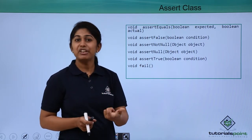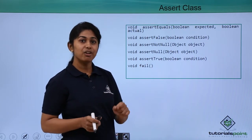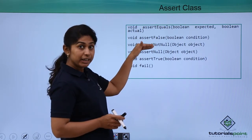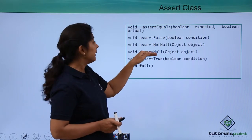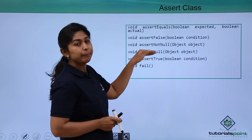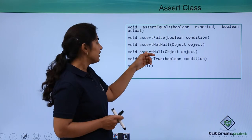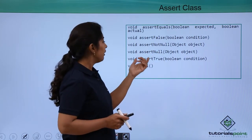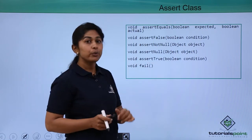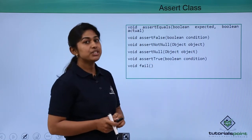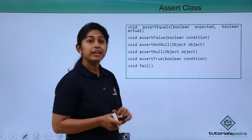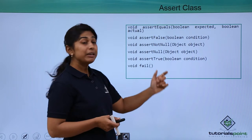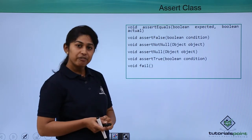The next method is assertNull. It verifies whether the value of that particular object is null or not. assertNotNull runs perfectly if the value is not null, while assertNull runs perfectly if the value is null. The next method is assertTrue, which checks whether the provided condition is true or not. It runs successfully when the provided condition is true and gives an error when the provided condition is false.